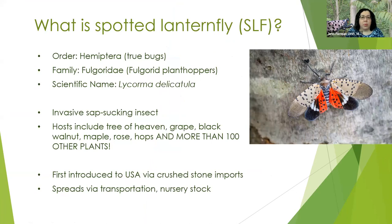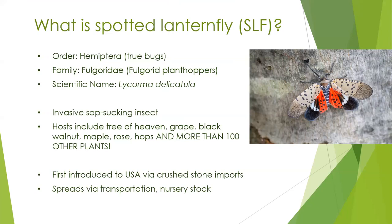Spotted lanternfly is a true bug. There's a specific order of insects called the Hemiptera that are actual bugs, and this bug is the only representative in New England in its own family, the Fulgoridae or the Fulgorid planthoppers. The scientific name is Lycorma delicatula. This is an invasive, sap-sucking insect, and its host plants include tree of heaven, grape, black walnut, maple, rose, hops, vines, and more than 100 other plants.